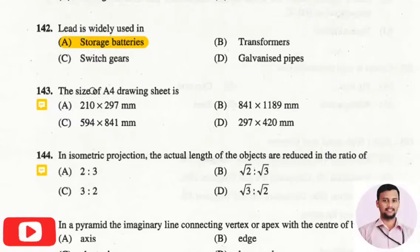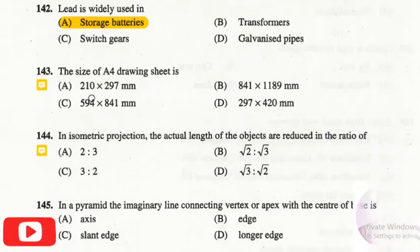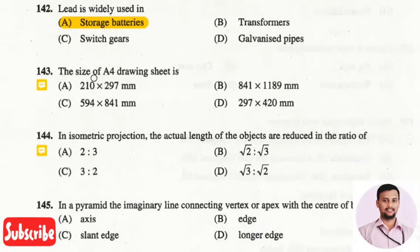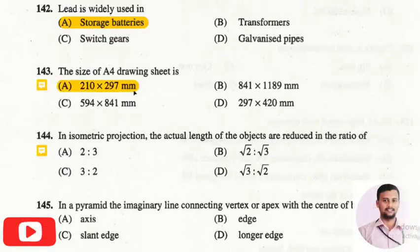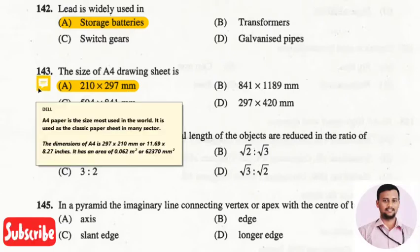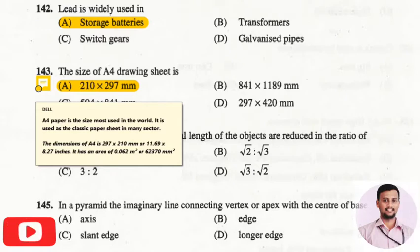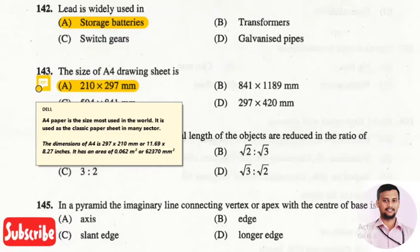The next question is: the size of an A4 drawing sheet is? The right answer is option A, that is 210 × 297 mm. A4 size paper is the most commonly used paper in the world, and it is used as a classic paper sheet in many sectors.